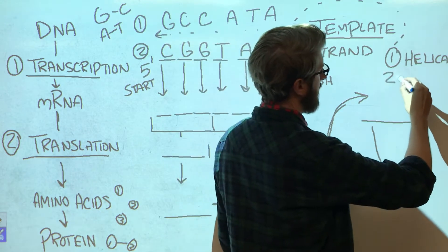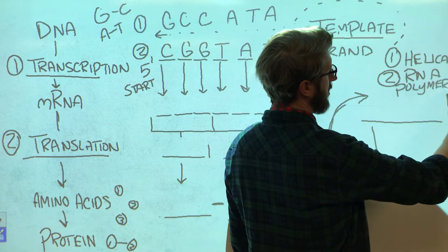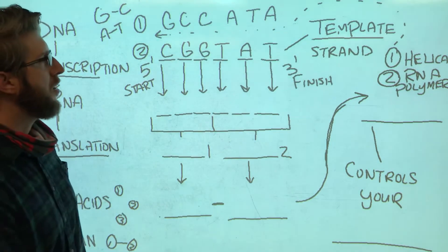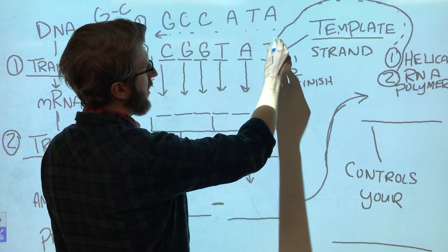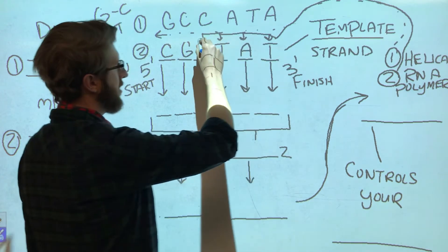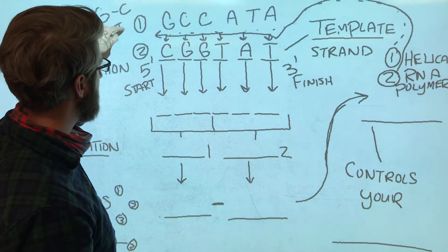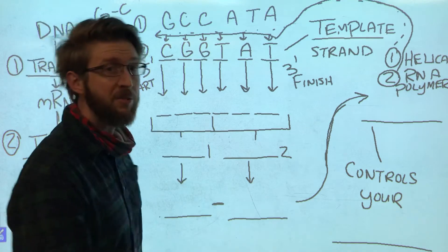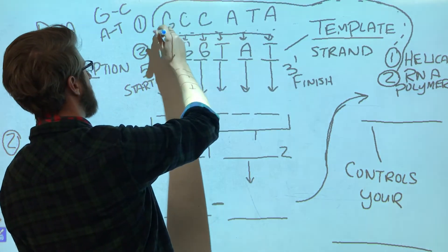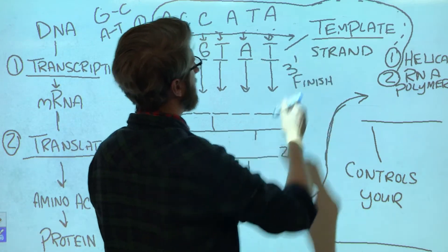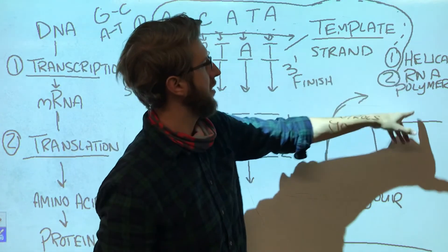Now then, right behind helicase is going to be an enzyme we call RNA polymerase. And RNA polymerase is going to come in right behind helicase and it's going to read every single base on the template strand. It's actually going to start here at the five prime end and go that way.